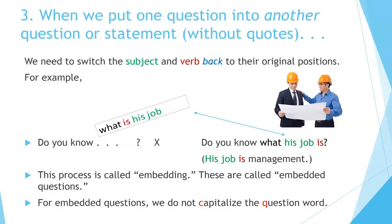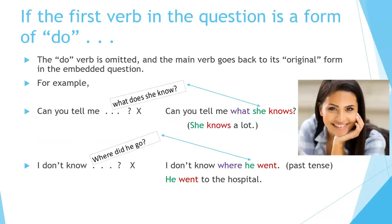For embedded questions, we do not capitalize the question word. If the first verb in the question is a form of DO, the DO is omitted and the main verb goes back to its original form. For example, 'What does she know?' embedded into 'Can you tell me' becomes 'Can you tell me what she knows?' — not 'Can you tell me what does she know?' Keep the statement word order. Also, 'Where did he go?' inside a statement becomes 'I don't know where he went.' Notice the past tense shifts from DID to WENT.